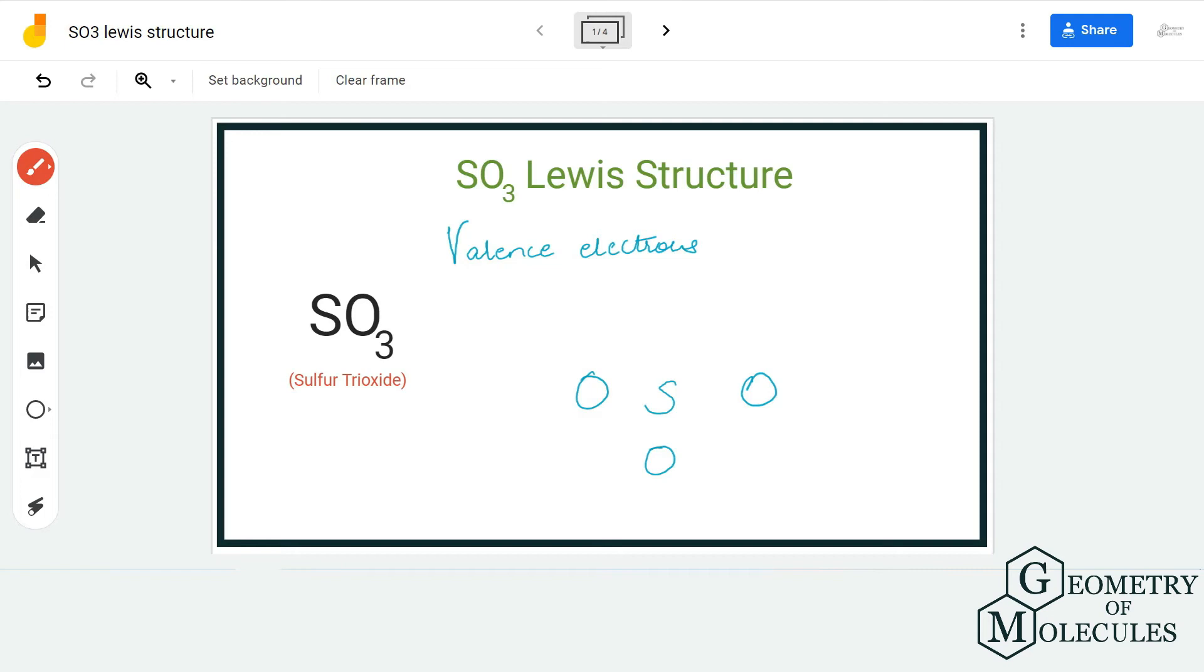Hi guys, welcome back to our channel. In today's video we're going to help you find out the Lewis structure of SO3 molecule. It's the chemical formula for sulfur trioxide, and to determine its Lewis structure we first need to know the total number of valence electrons.